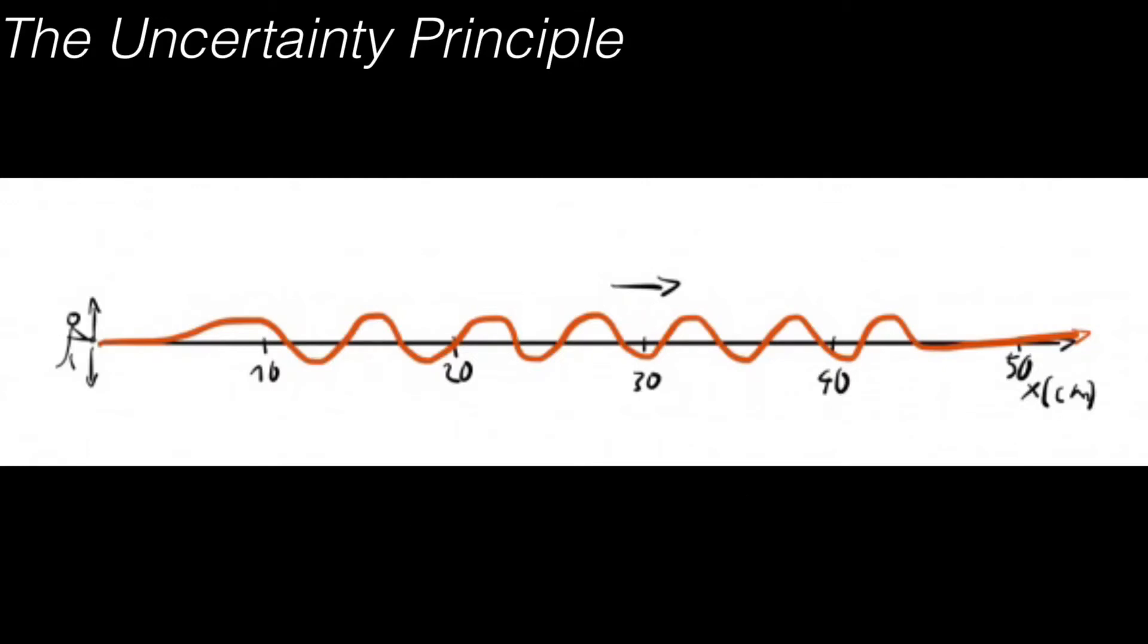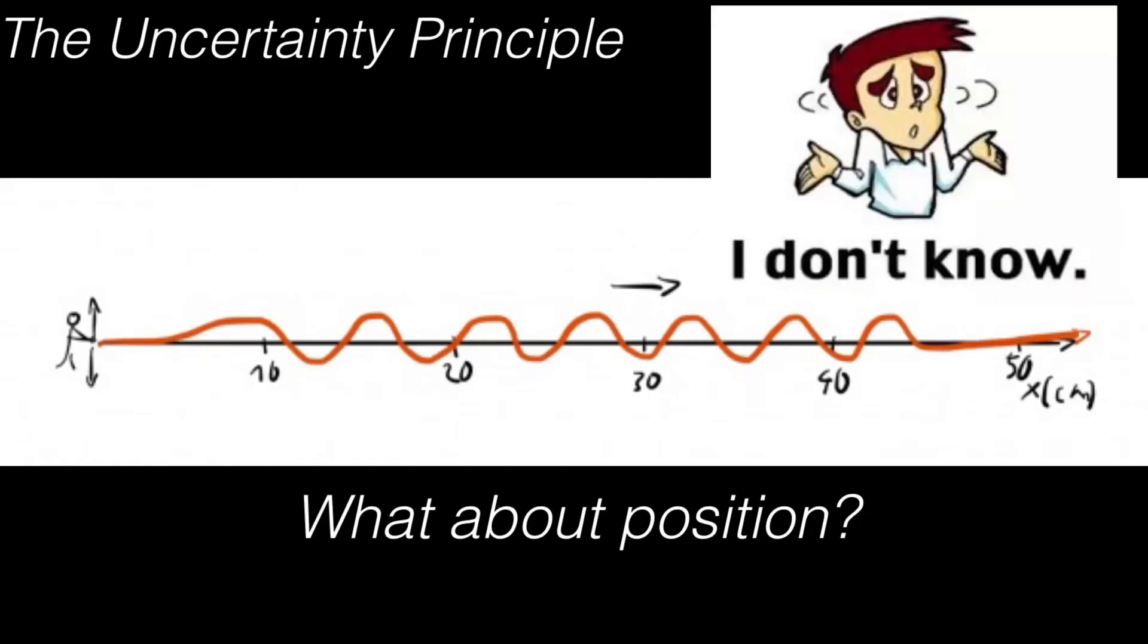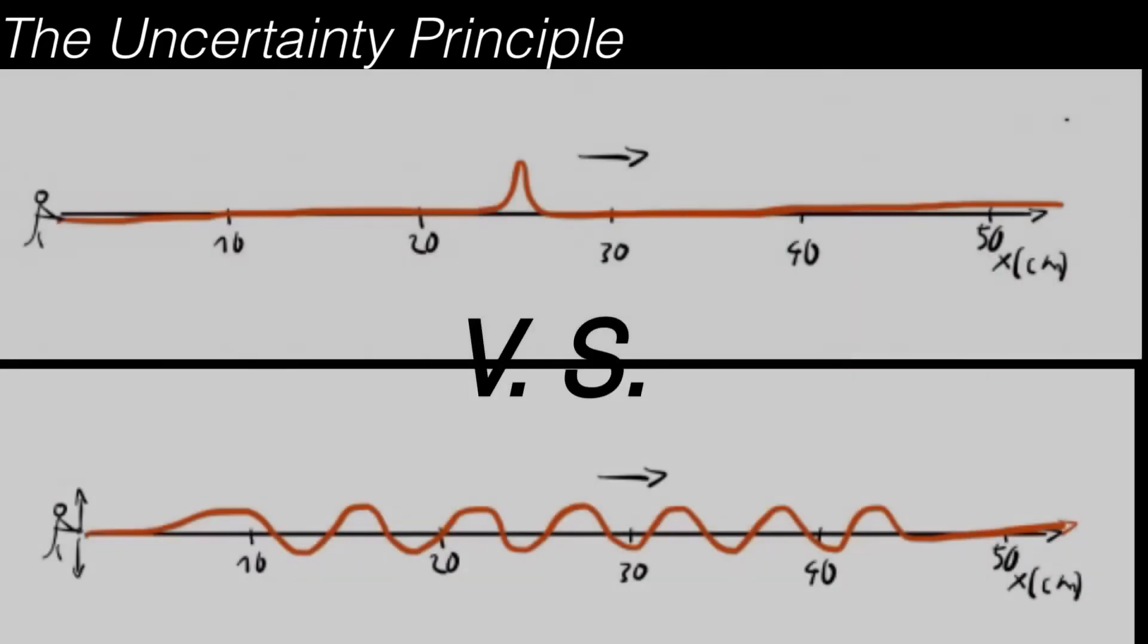But now if you ask the other question, hey man, where exactly is the wave? Well, he doesn't know. The relationship of knowing more on position means that you know less on wavelength, and if you know more on wavelength, you know less on position. It's basically Heisenberg's uncertainty principle.